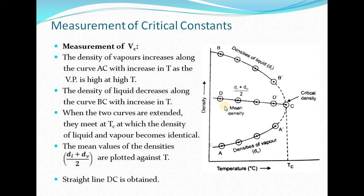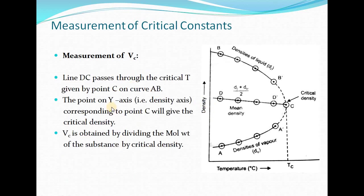The critical density can be determined from the y-axis corresponding to point C, which corresponds to the critical temperature. Once the critical density is determined, we can easily find the critical volume: V_c = molecular weight / critical density. With the critical density determined from the graph, substituting the molecular weight gives the value of V_c. This is the experimental measurement of critical volume.